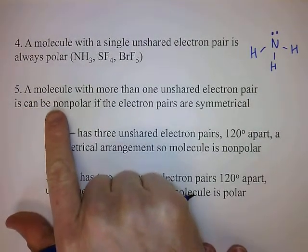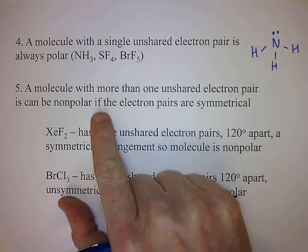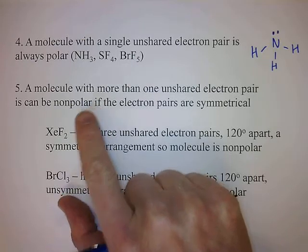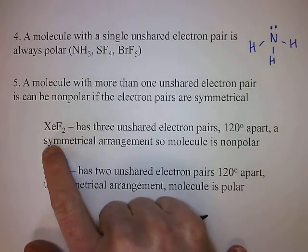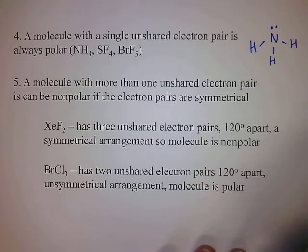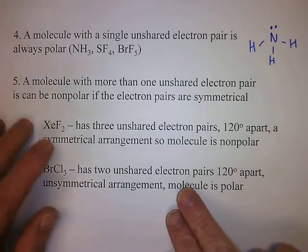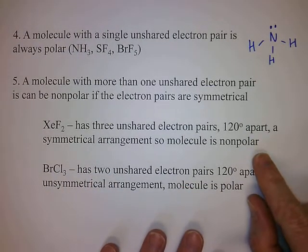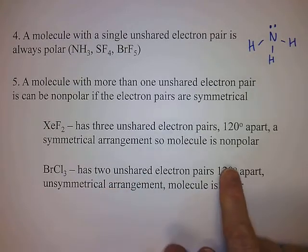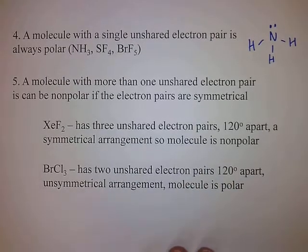A molecule with more than one unshared pair can be nonpolar if the electron pairs are symmetrical. For example, XeF2 has three unshared pairs that are 120 degrees apart — the unshared pairs occupy the equatorial positions, making it nonpolar. On the other hand, BrCl3 has two unshared pairs that are not balanced, so it's unsymmetrical and the molecule is polar.